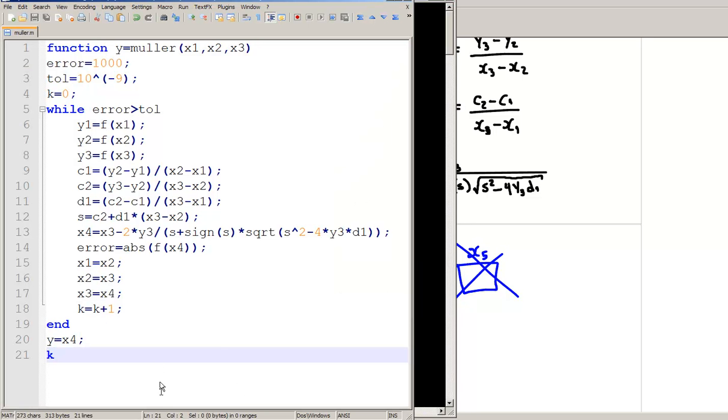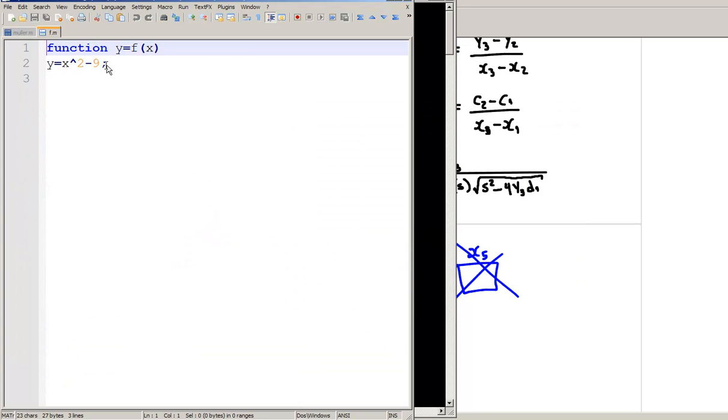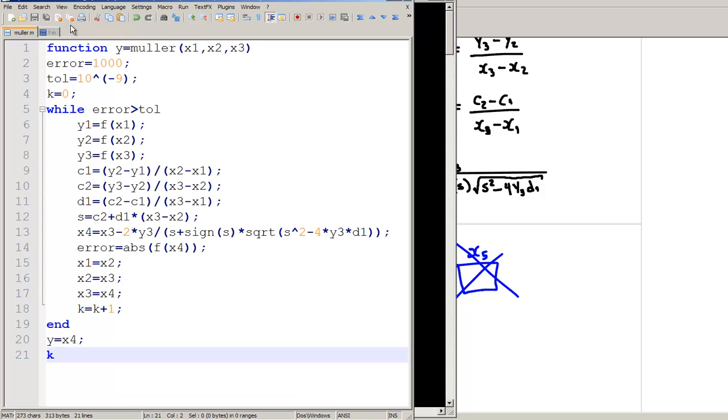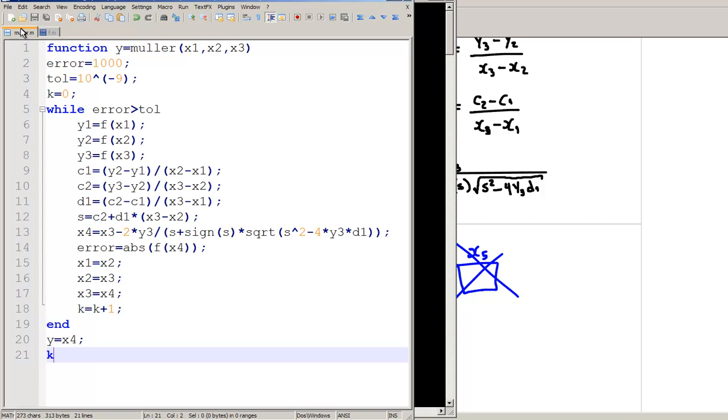Let's test the function or the program with the function that we've been using, function f, which is finding the square root of 9. Now, remember, Mueller's method is based on approximating the function with the quadratic function. But, the function that we're going to use here is already quadratic. So, Mueller's method is actually going to solve this in just one iteration. Because, you're approximating the quadratic function with the quadratic function. So, you're going to get the solution right at the first iteration.